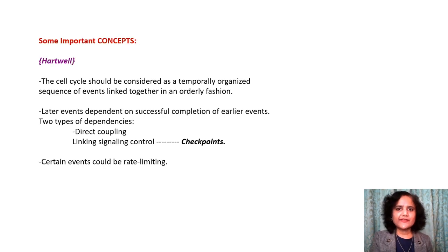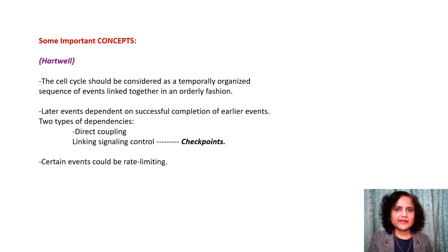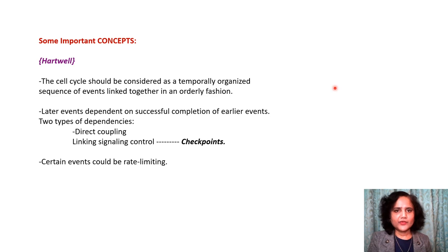Here are some important concepts postulated by Lee Hartwell. According to him, the cell cycle should be considered as a temporally organized sequence of events linked together in an orderly fashion. Later events depend on successful completion of earlier events. There could be two types of dependencies: direct coupling or linking via signaling control, the latter referred to as checkpoint controls. He also postulated that certain events in the cell cycle could be rate limiting.